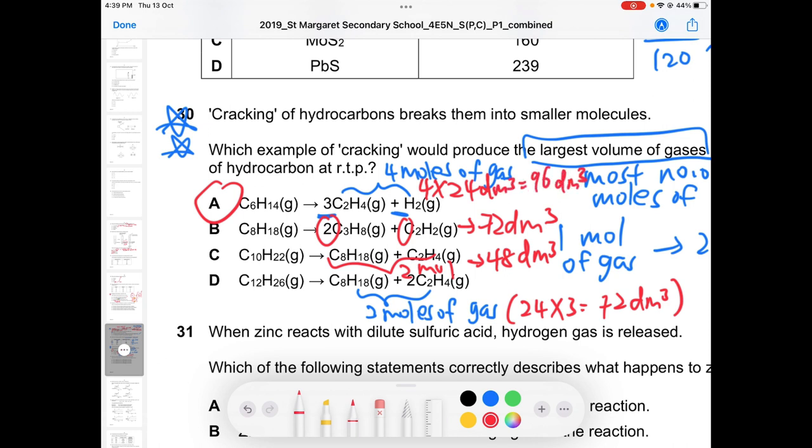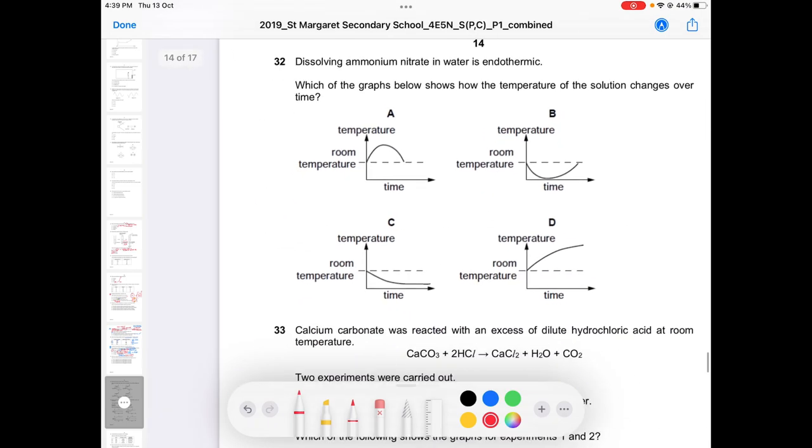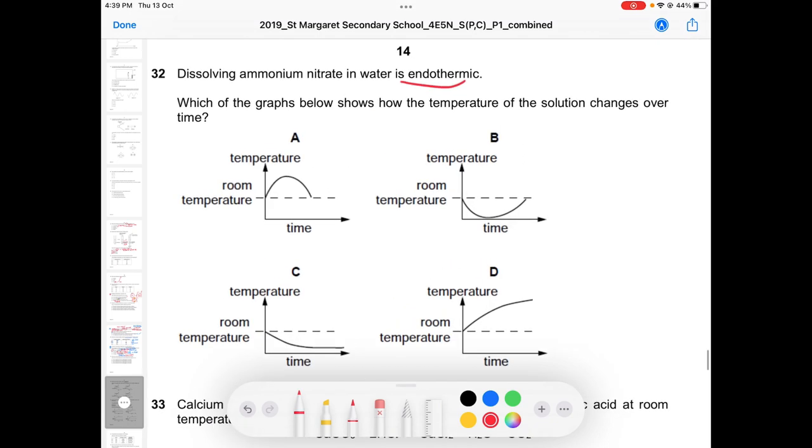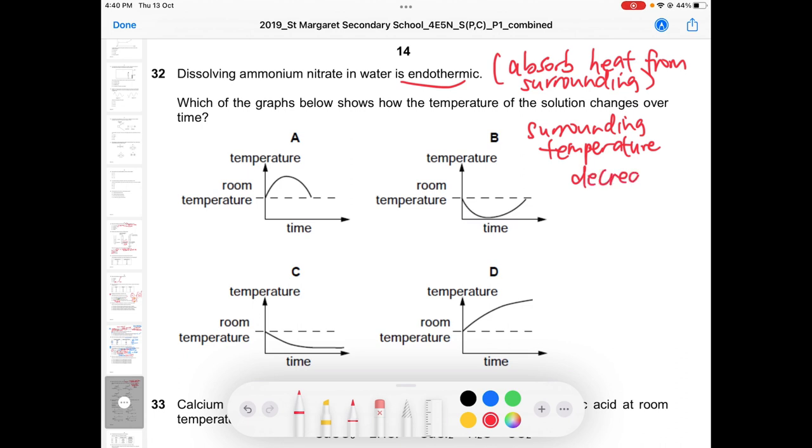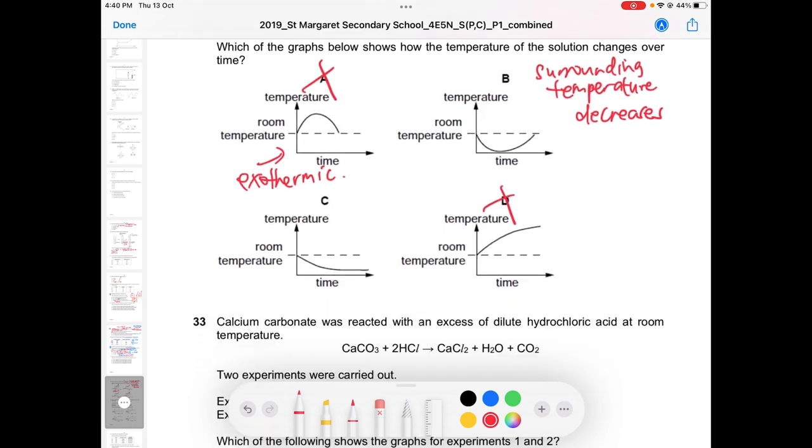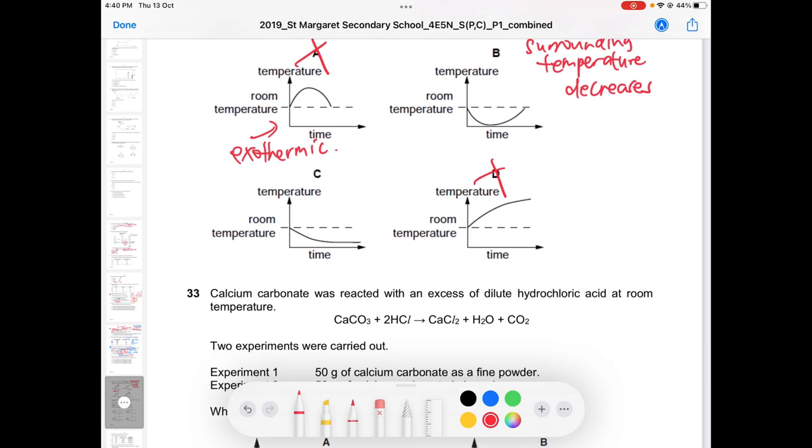The next question, question 32. Here they already say endothermic, so it absorbs heat from surrounding. Because of that surrounding temperature will drop. Surrounding temperature decreases, become colder. That's why A and D definitely out. This is your exothermic reaction. Exothermic meaning you feel the reaction mixture become warmer.